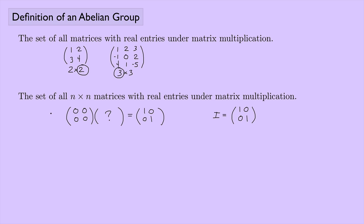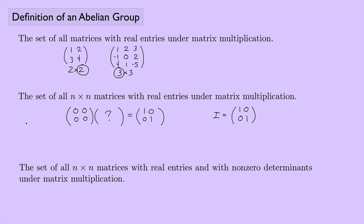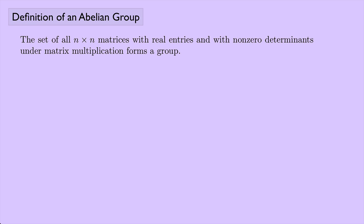From linear algebra, the inverse of a matrix exists as long as the determinant is not zero. So we need to consider only matrices with non-zero determinants. How about: the set of all n×n matrices with real entries and with non-zero determinants under matrix multiplication? We need to check the four group properties, and indeed this is a group.